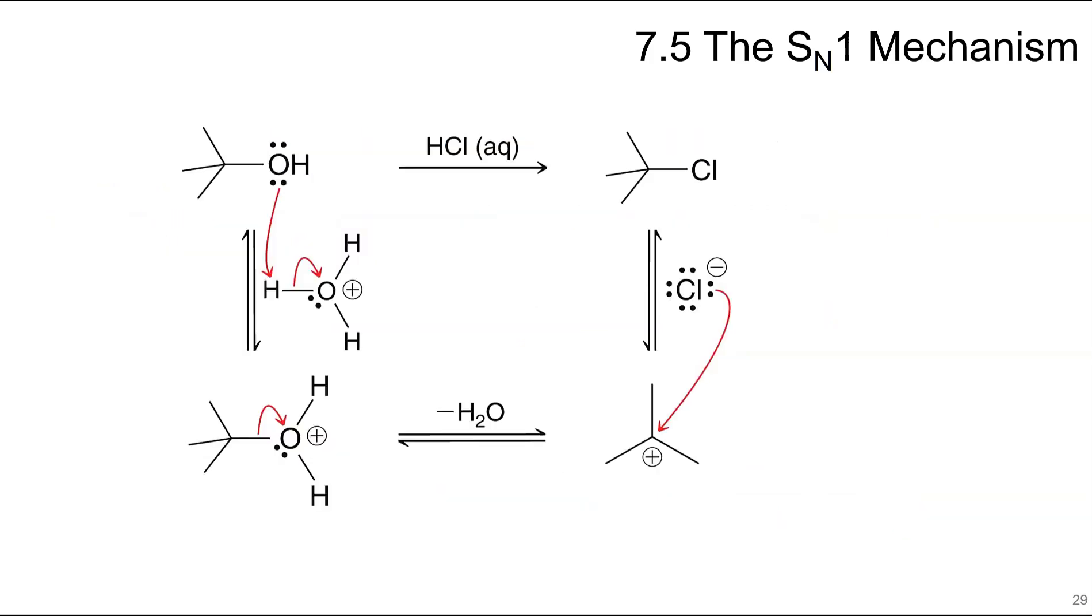So in the mechanism of an SN1 reaction, in this particular one with the OH as the intended leaving group, we have to do a proton transfer. So the OH picks up a proton from an acid, and then the leaving group leaves, so this is loss of leaving group, which is the water. Then we get nucleophilic attack. And this is our nucleophile, here's our electrophile, and that's the substitution product. So one very important thing to remember about SN1 reactions is that you must have an excellent leaving group.